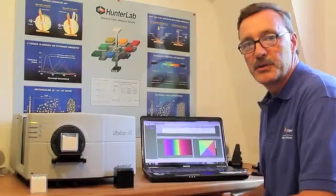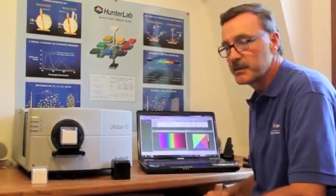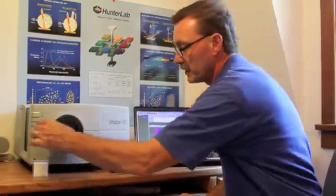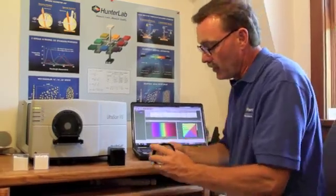HunterLab offers two versions of the Ultrascan. This is the Ultrascan VIS $17,000 system today used to measure powders. We can also measure small volumes or small quantities of powder with a powder holder, where you may have less than 1 cc of powder used primarily in product development.